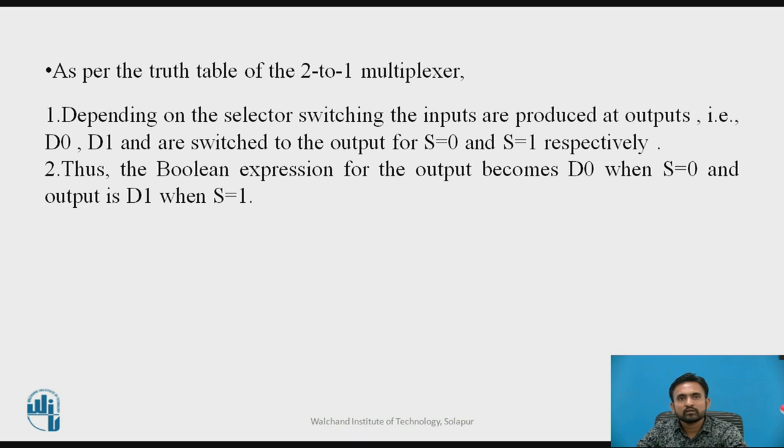If you are looking my truth table in my previous slide 2 to 1 multiplexer, depending on the selector switching the inputs are produced as output. That is D0 and D1 are switched to the output for S equals to 0 and S equals to 1 respectively. The Boolean expression for the output becomes D0 when S equals to 0 and output is D1 when S equals to 1.